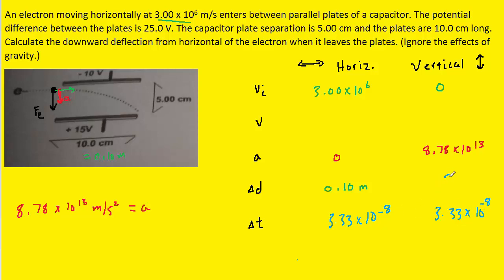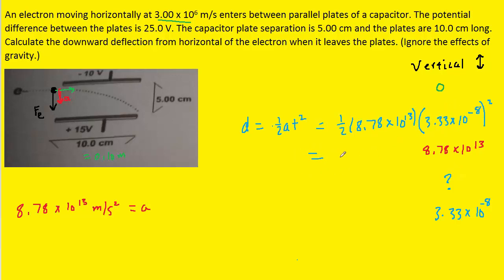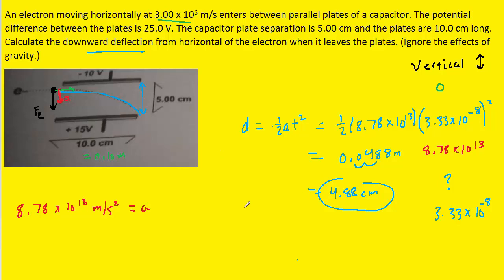Now that we have the time, we calculate the vertical displacement using the same kinematic equation: displacement equals initial velocity times time plus one-half times acceleration times time squared. Since the initial vertical velocity is zero, that term drops out. Plugging in the acceleration and squaring the time, the vertical displacement is approximately 0.0488 meters, or 4.88 centimeters — this is the downward deflection of the electron as it passes through the plates.